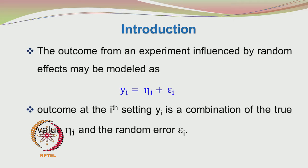What happens is you have the true value here and the actually observed value here. The two are not identical. You can see that you also have an extra term epsilon_i in this equation. This is the random error component. It can take a positive value or a negative value. So the response may be higher or lower than the value given by the law, depending upon whether the error component was positive or negative.